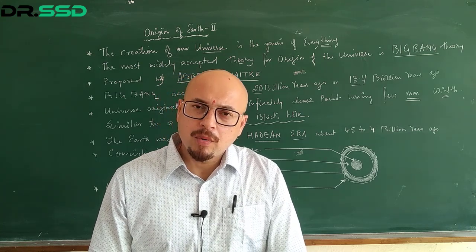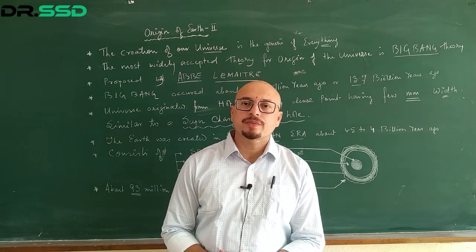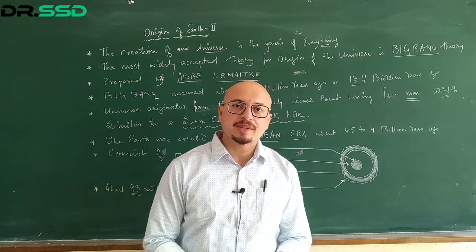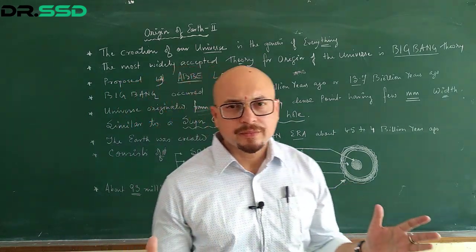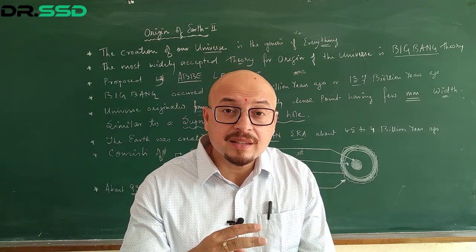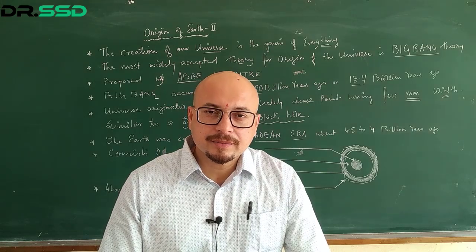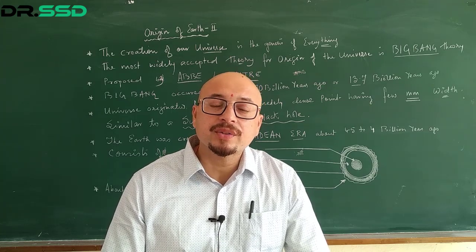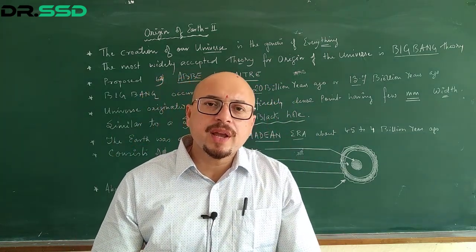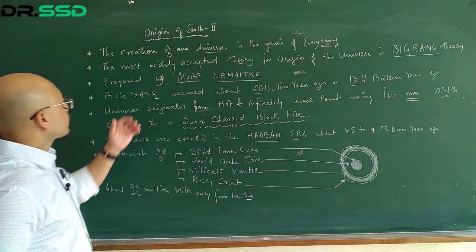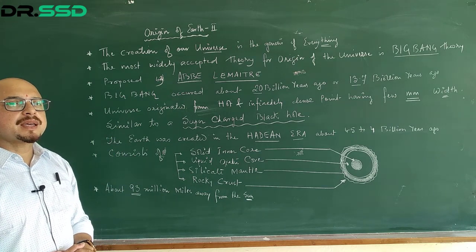So, Big Bang — of what? Of which object, of which matter? The creation of our universe is a genesis of everything. Whatever we think, whatever we see, everything has its origin from a Big Bang. Why do I say Big Bang every time? Because it is the most widely accepted theory to date — that the entire universe was created out of a Big Bang. This theory was proposed by Abbie Lemaitre.